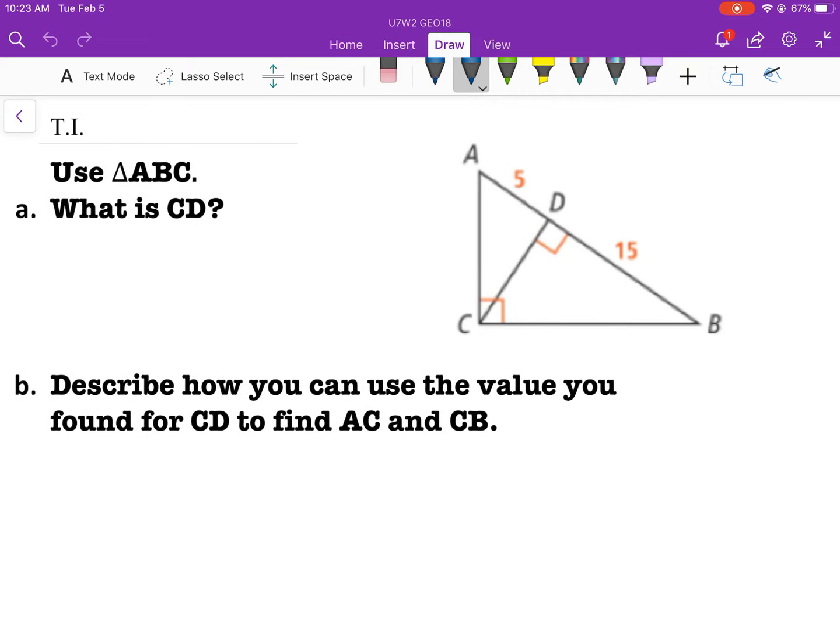Try it. Use triangle ABC. What is CD? Same thing that we did last time. We can say that AD over CD is equal to CD over BD. Plug in some stuff. And you would get 15 over CD is equal to CD over 5. Cross multiply. CD squared is equal to 75. And the square root of 75 is equal to 8.7.